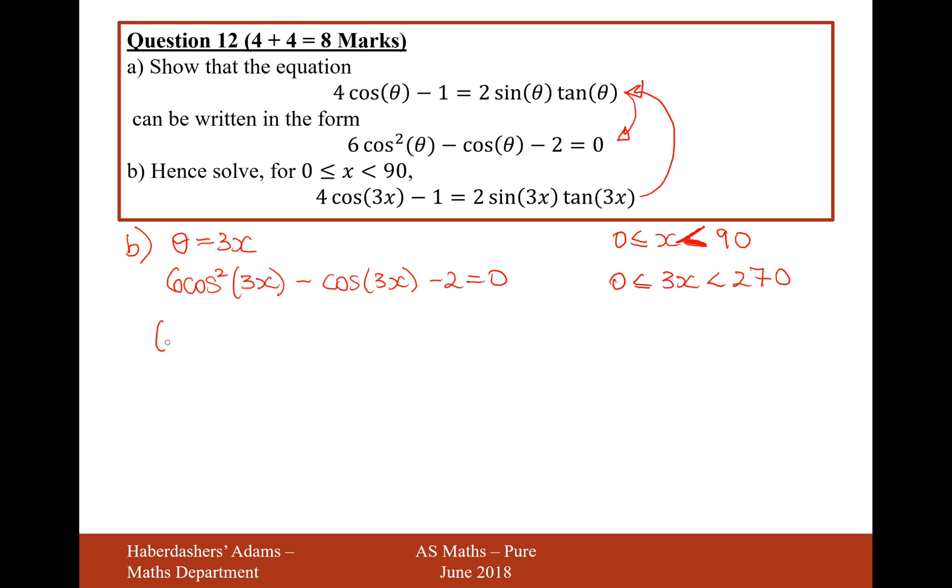So now I need to factorize it. It's going to probably be 3 cos 2x and 2 cos x, and it's going to be minus 1 and 2, I think, so like that.